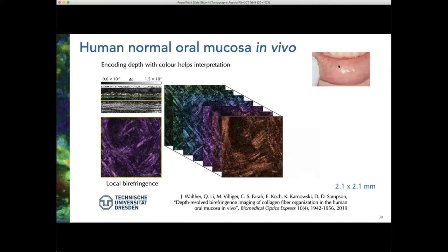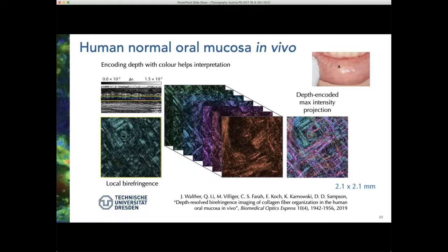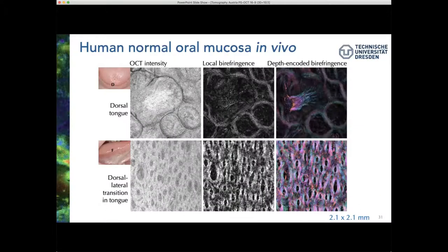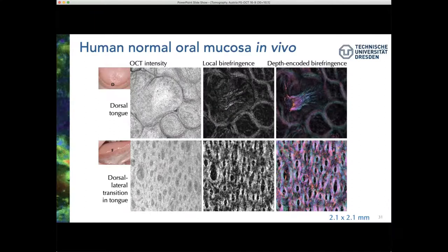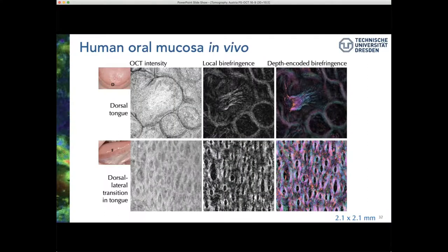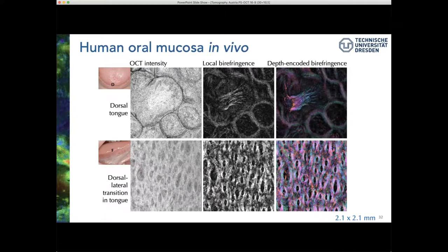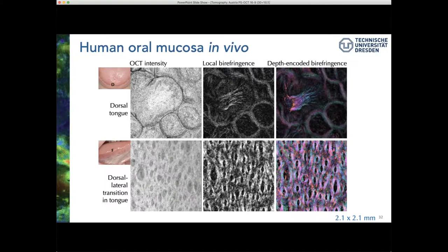We did some work on depth color-coding this. As you step through bands, they reveal quite nicely the different structures. We started playing around with how to present that in some clinically quickly accessible form, which tends to highlight the structures and how clear they are. Looking elsewhere in the normal oral mucosa — on the dorsal tongue and the transition from dorsal to lateral — you can see the OCT intensity images display greater contrast than in the previous images, but nonetheless the local birefringence images are very strongly contrasted, and you can perform the same depth color-coding to bring out features.